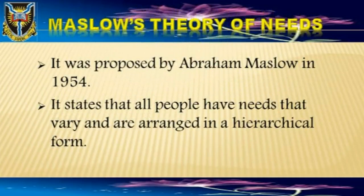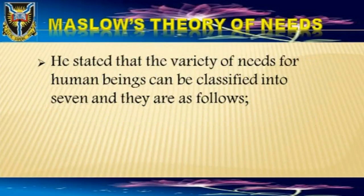Maslow's Theory of Needs. This Theory of Needs was proposed by Abraham Maslow in 1954. It states that all people have needs that vary and are arranged in a hierarchical form. It stated that the variety of needs for human beings can be classified into seven. These are in order of importance, starting from the bottom to the top.